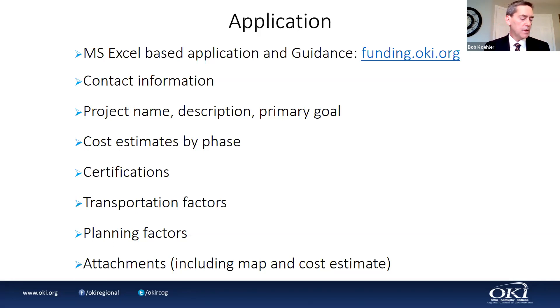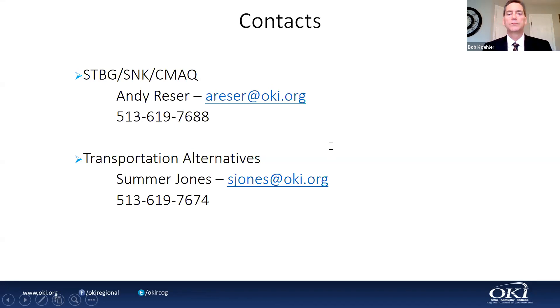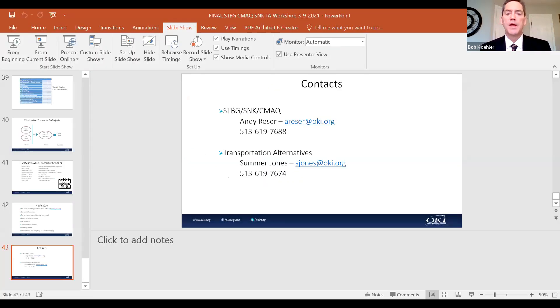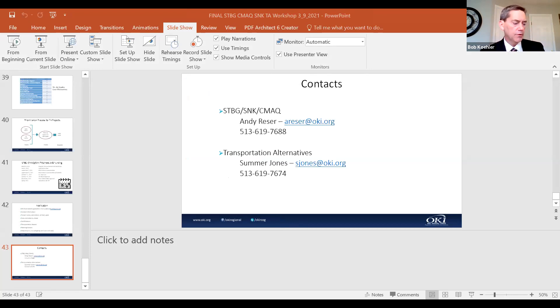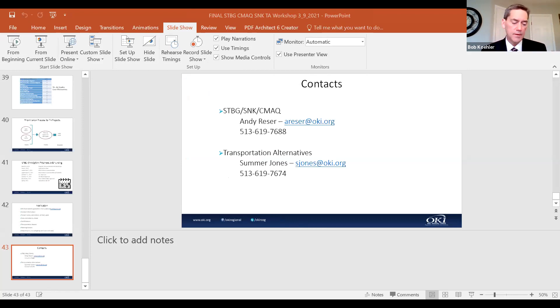Staff contacts: call Andy Reeser or Summer Jones. Andy is our point person on STBG and CMAC; Summer is our point person on TA. Both can answer questions on different aspects of either program. For economic vitality questions, call Andy Meyer. For SRPP or local plans, contact Travis Miller.